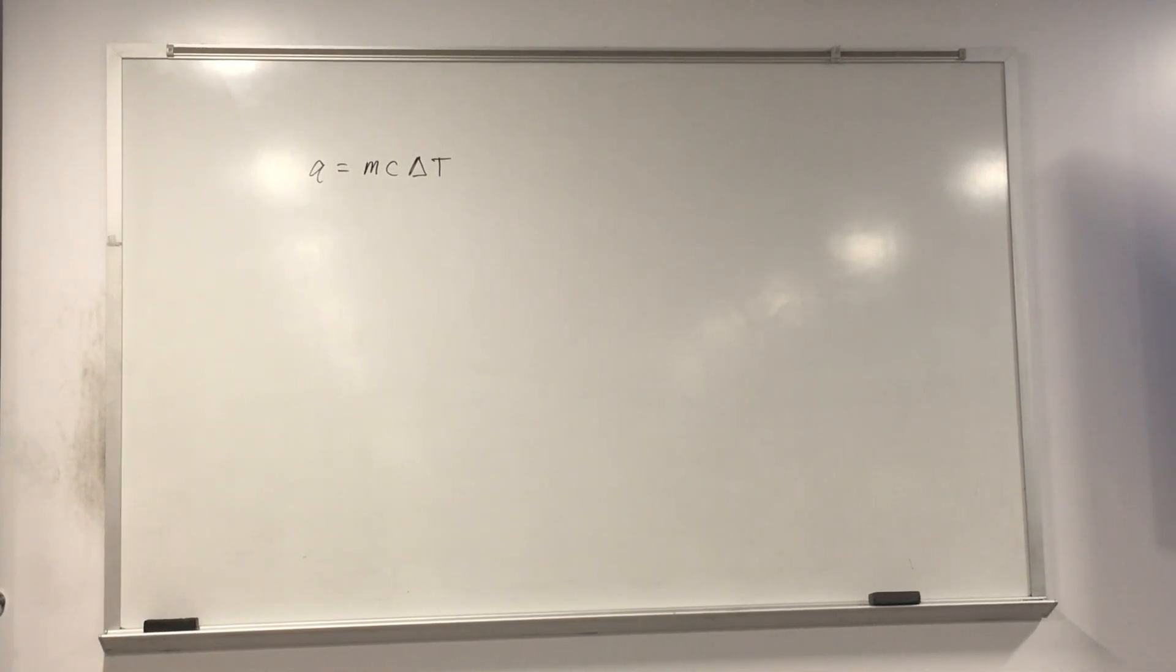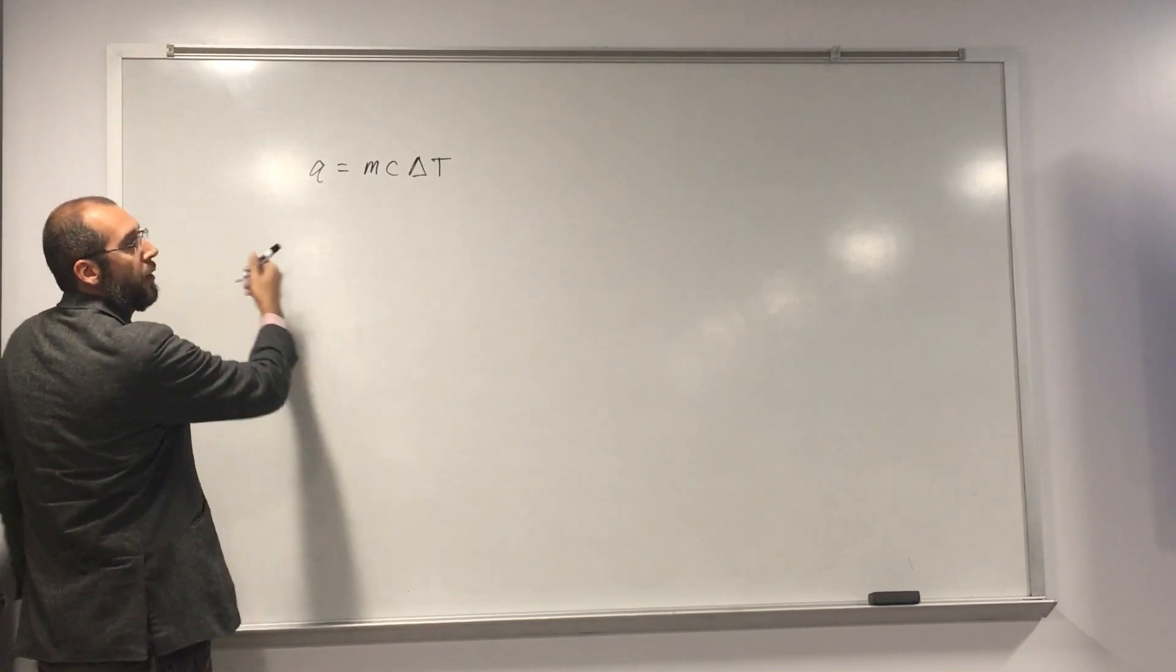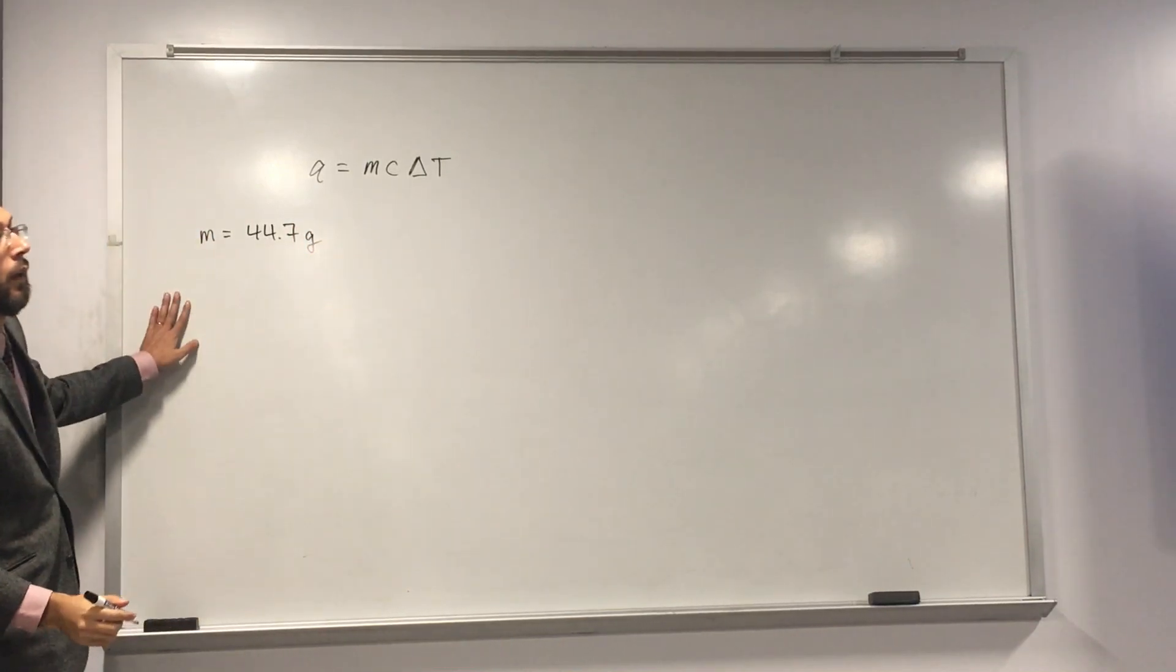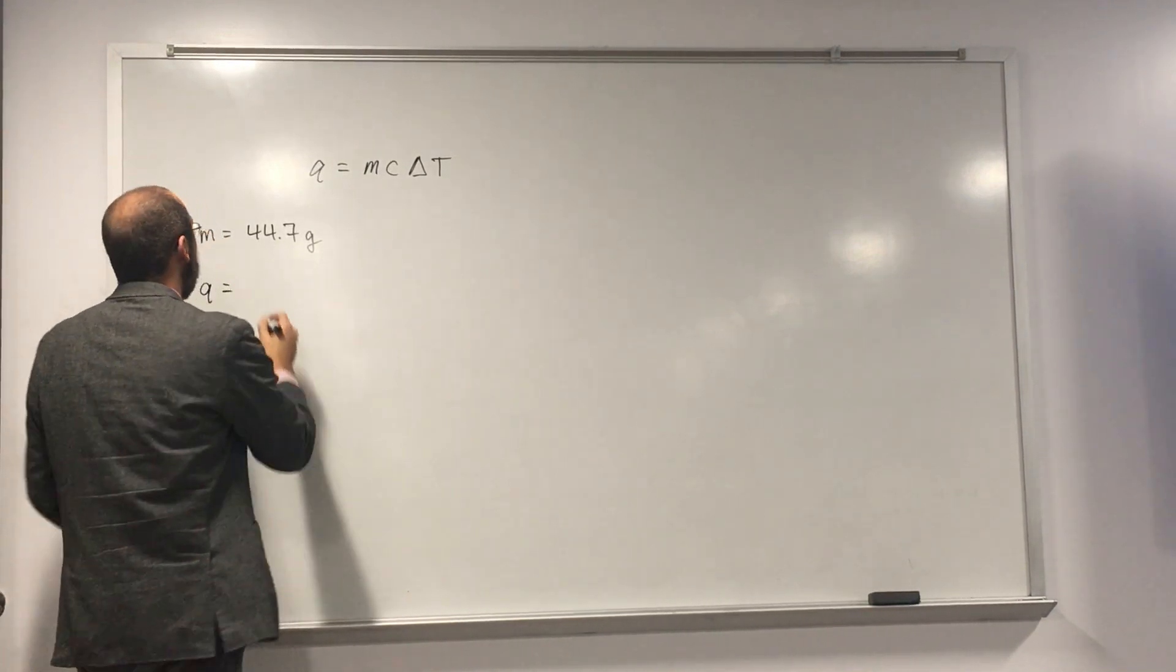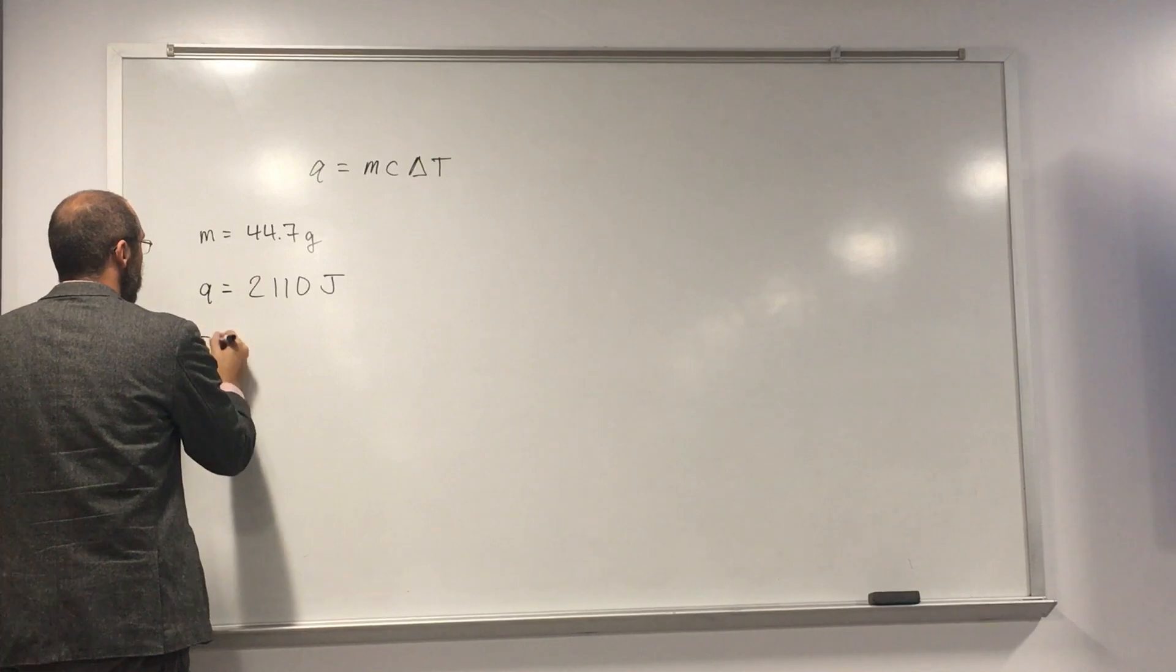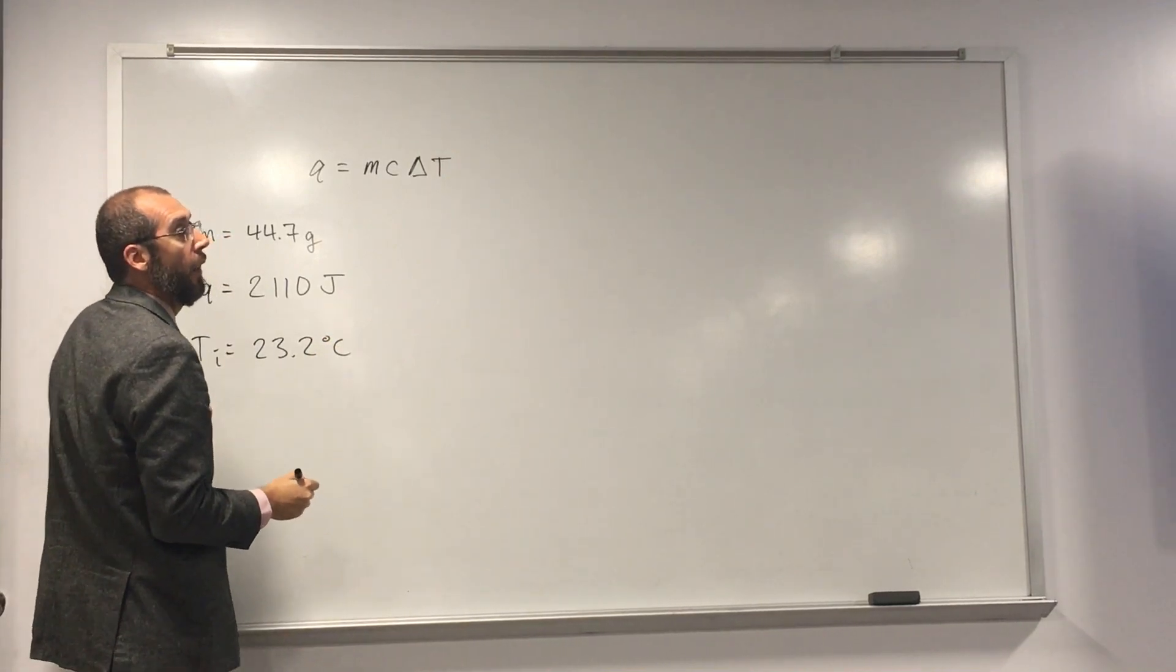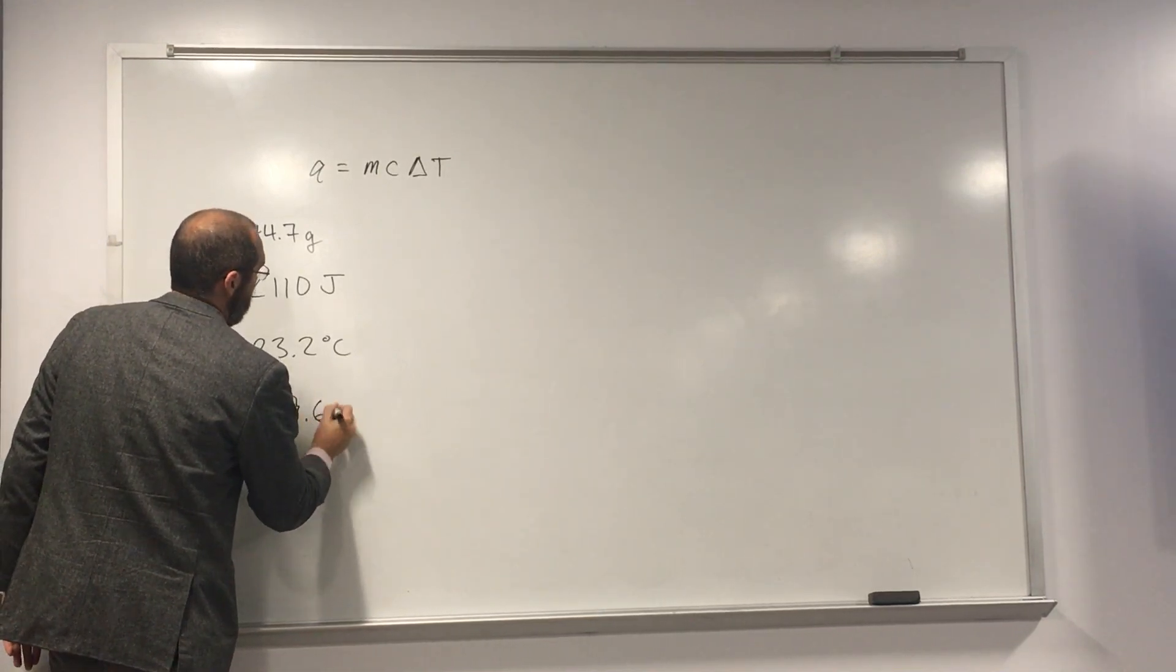So in this particular problem, we're looking for C, the specific heat. So the first thing we're going to want to do, let's go ahead and label what the problem gives us first. So it gives us the mass, right? That's 44.7 grams. And it gives us the heat, which is Q, 2110 joules. And it gives us the initial temperature, 23.2 degrees C, and then the final temperature, 89.6 degrees C.